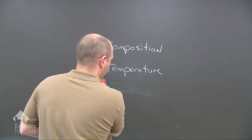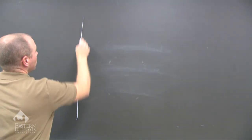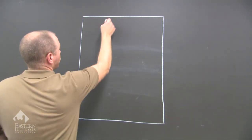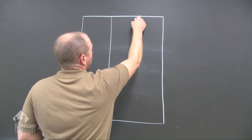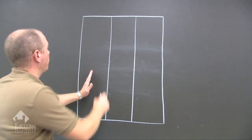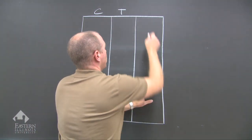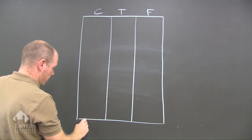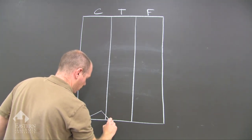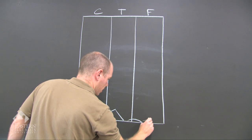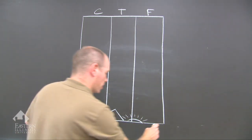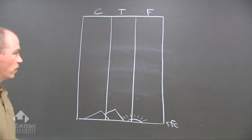Let's go ahead and draw three columns. We're going to do a box here which shows the cutaway of the atmosphere, and then we've got three columns: composition, temperature, and function. I just want to make sure you understand that this is the surface — we've got a couple of mountains here, the setting sun, etc. — so everyone knows this is the surface of the Earth. SFC is the surface.